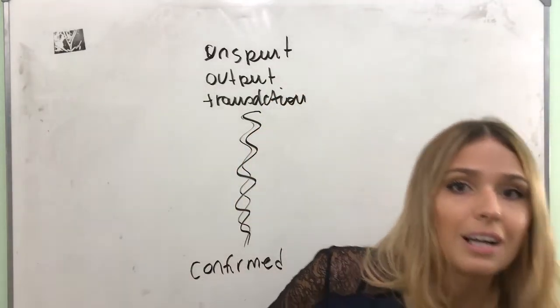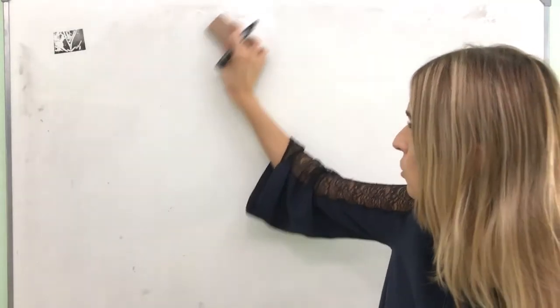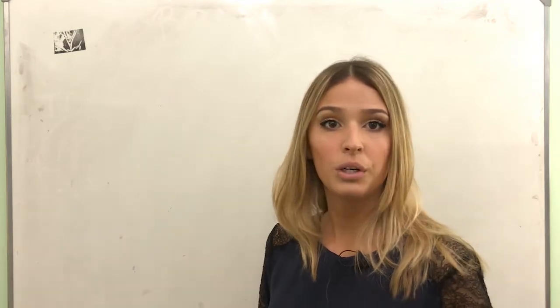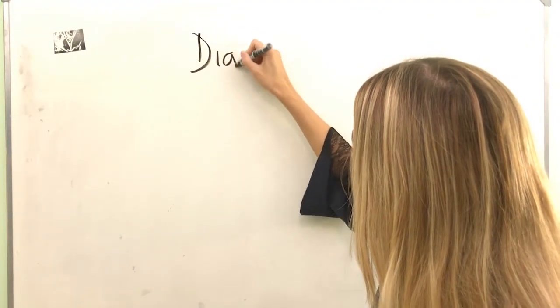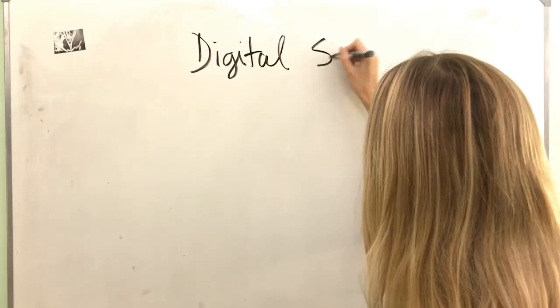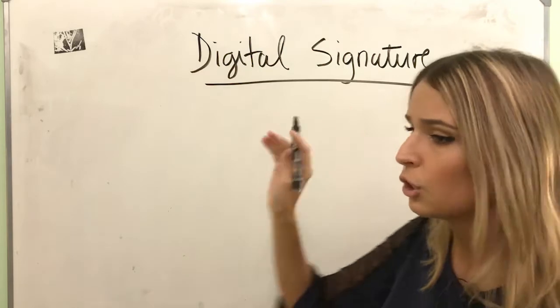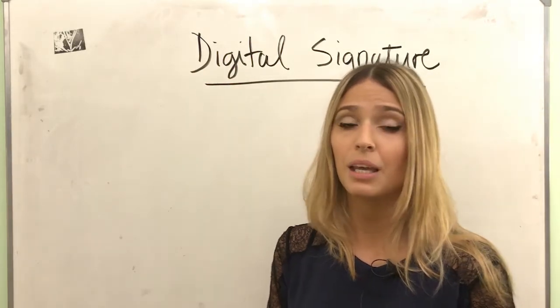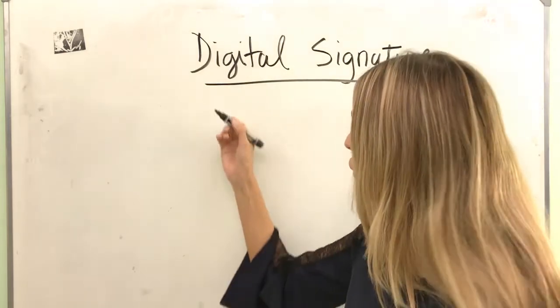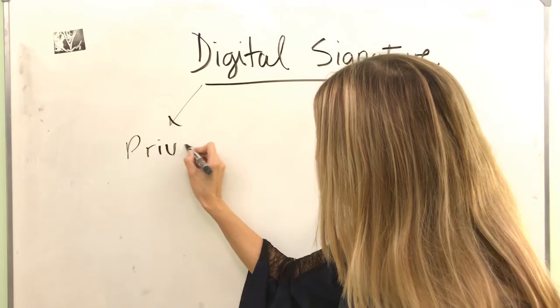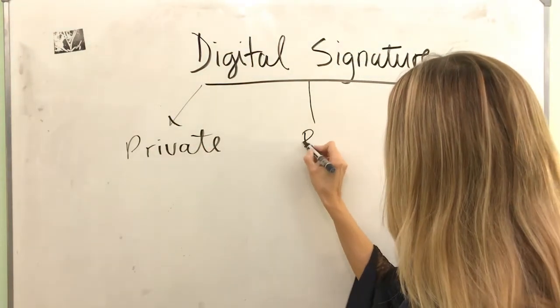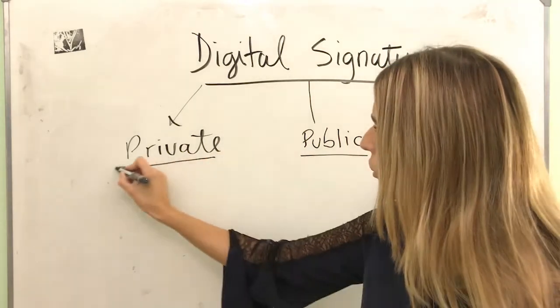Many things happen in this process that you will start learning in this video. The first thing we're going to learn about transactions is that in order for people to know that I am the authentic owner of the money I want to send, we need to sign something called a digital signature, for which we need two keys — a private key and a public key. They always go together.